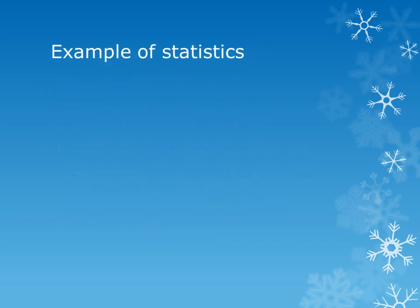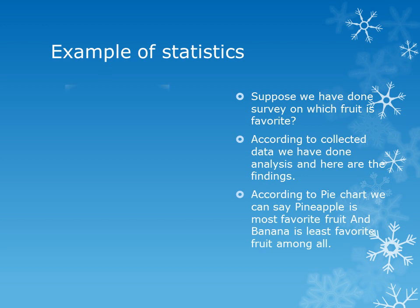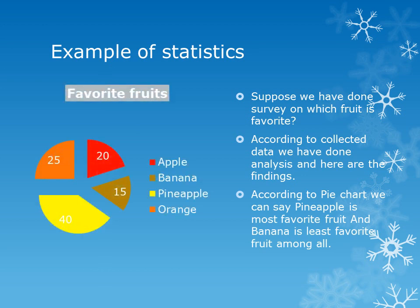Let's see an example of statistics. Suppose we conducted a survey asking a few people which fruit is their favorite. According to the collected data we did analysis, and here are the findings: the pie chart shows 40% of people like pineapple, 25% like orange, 20% like apple, and 15% like banana. This data is hypothetical. We can identify from this that pineapple is the most favorite fruit and banana is the least favorite fruit.